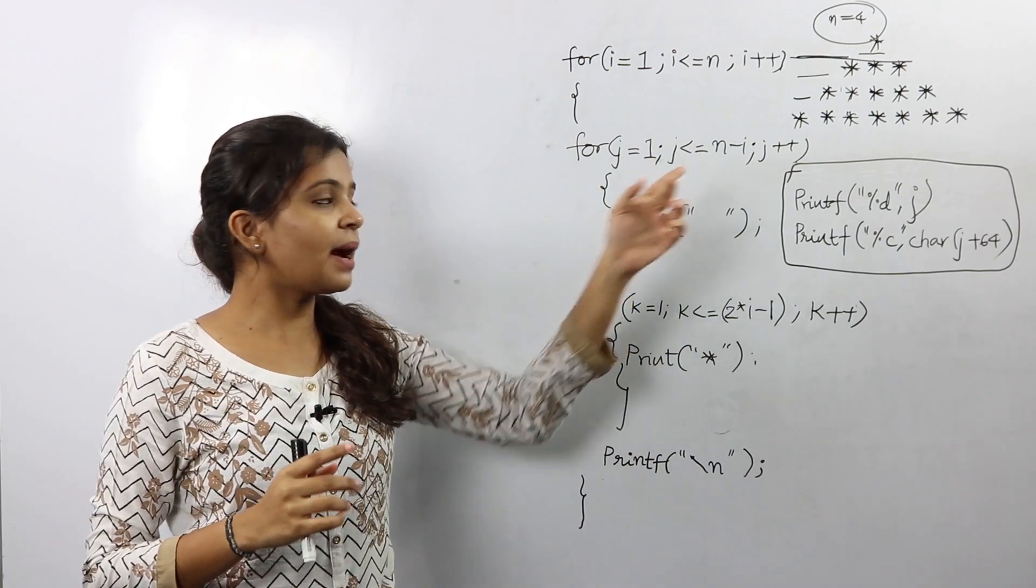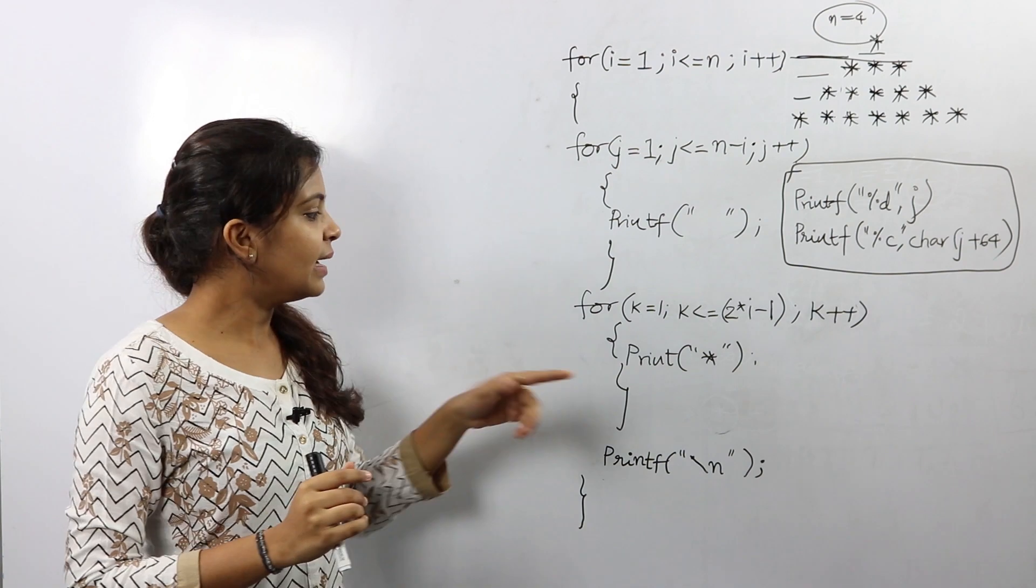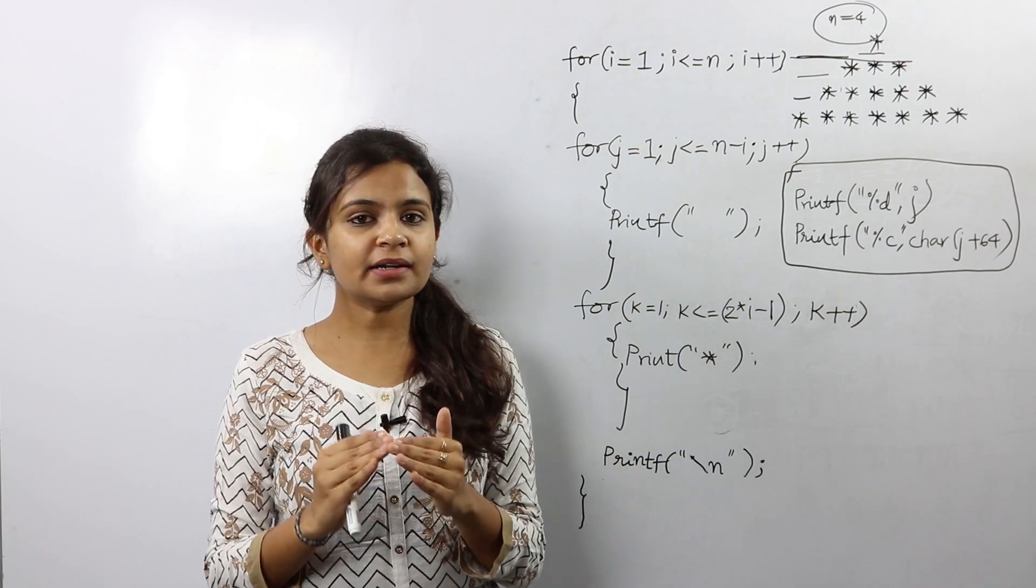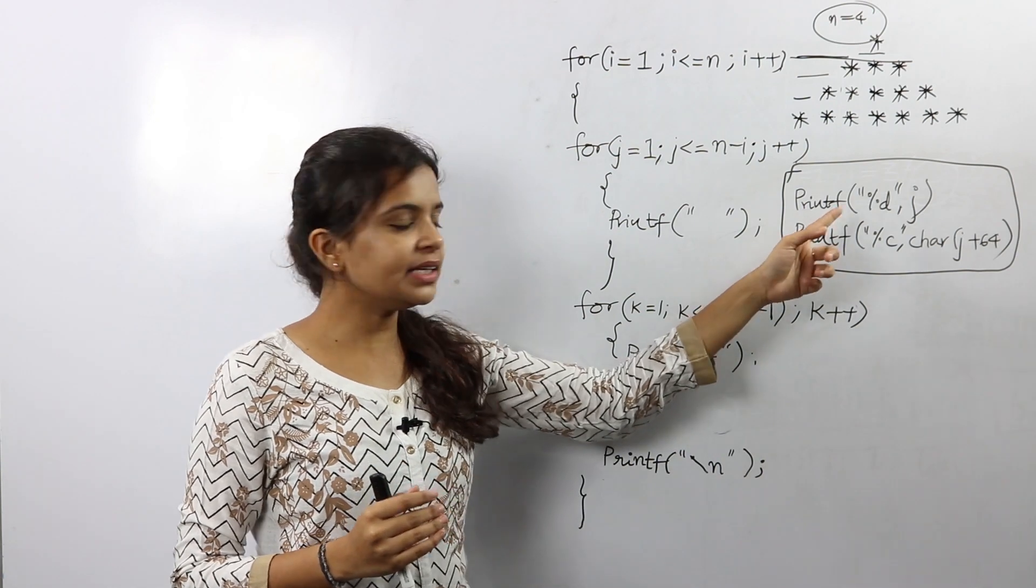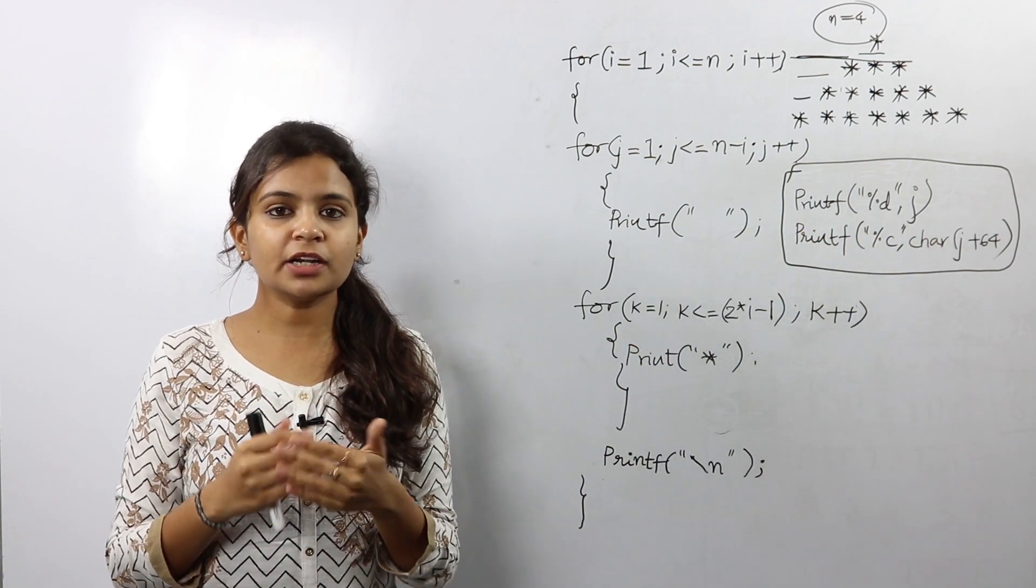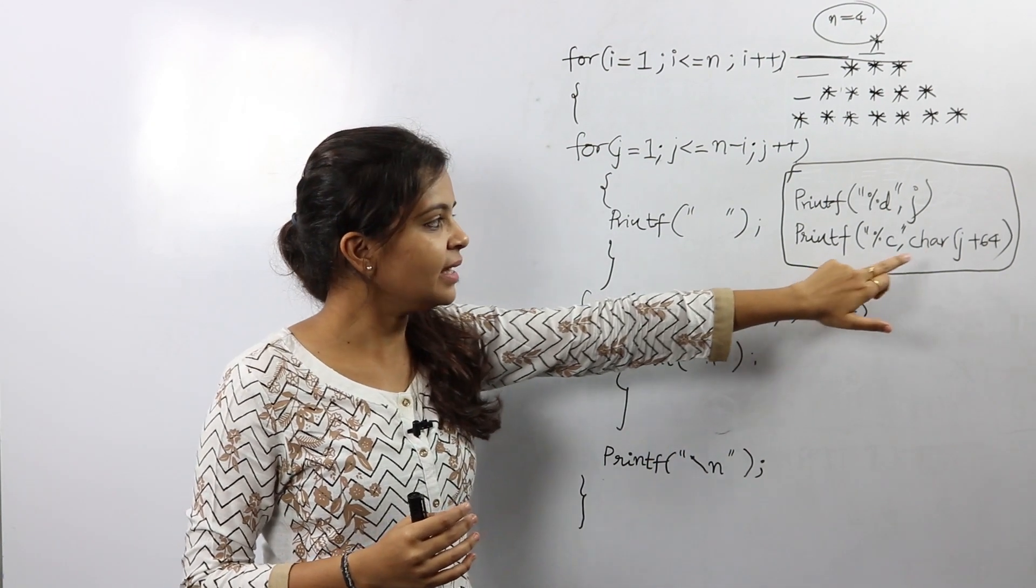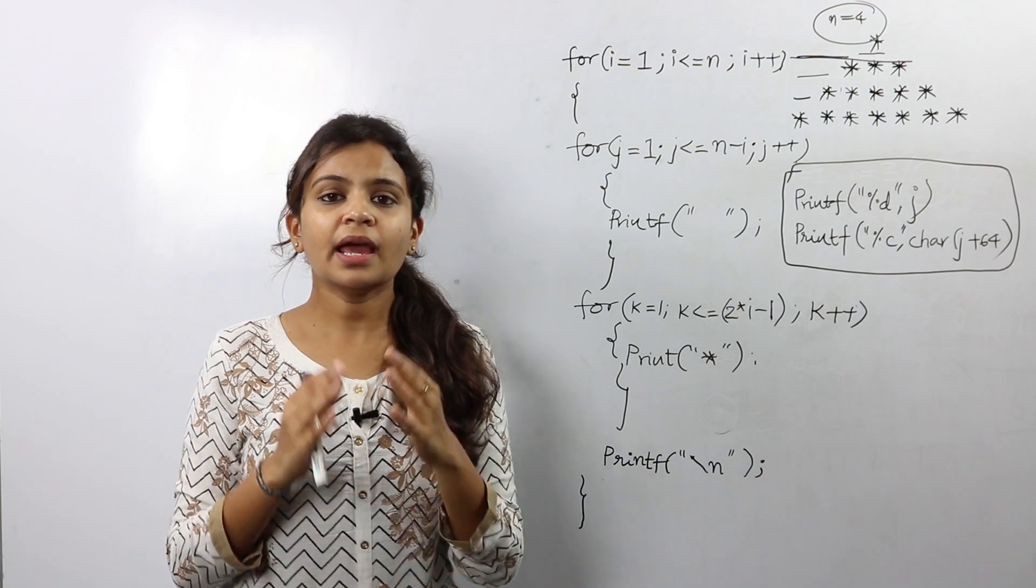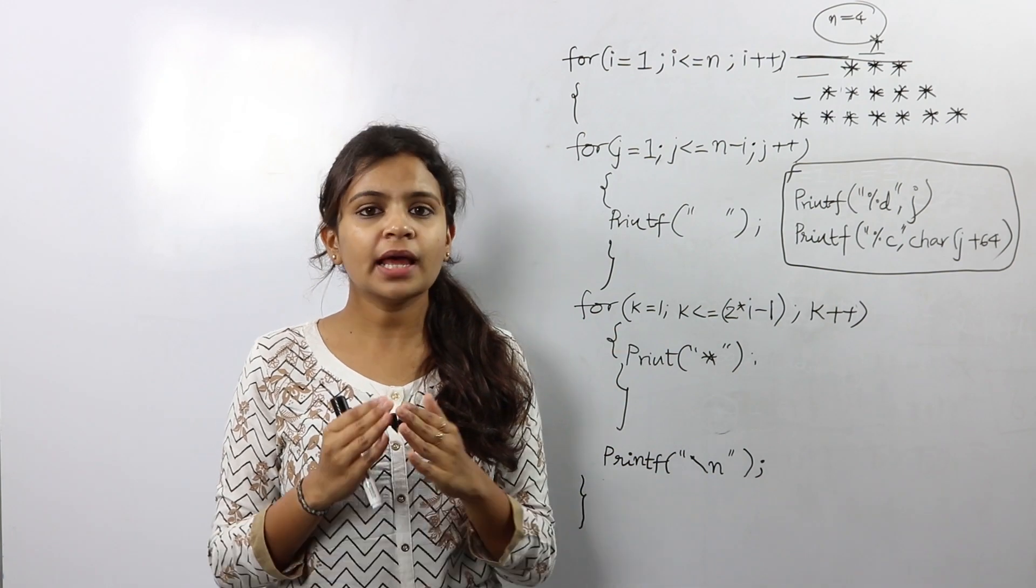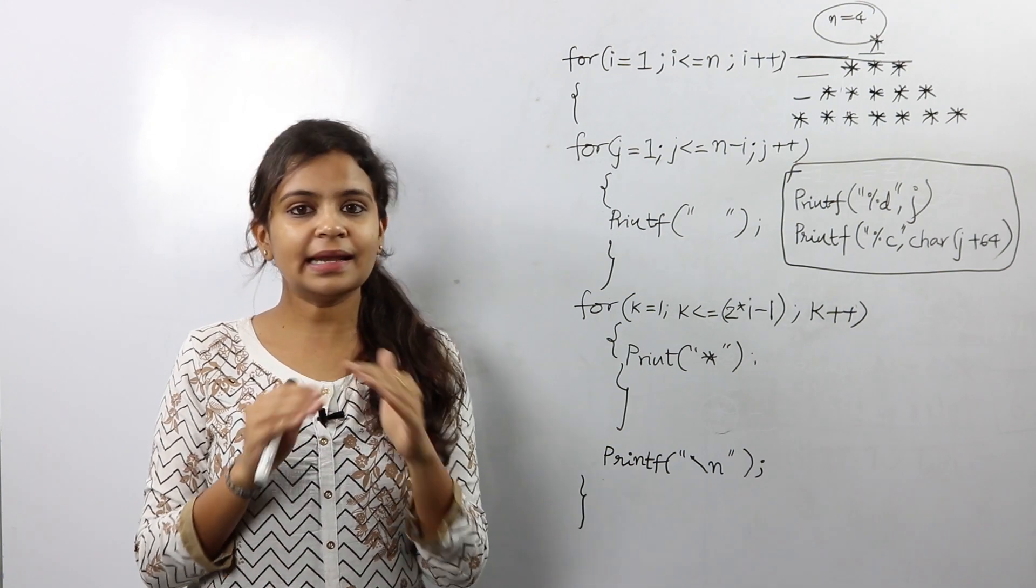So you can also print out this pattern using numbers and alphabets. All you have to do is replace this statement with this while you want to print it out with numbers. That is %d, j. And similarly when you want to print it using alphabets, replace it with this statement %c char of j plus 64. In case you have any doubts as to why it is char of j plus 64, then go check out the previous pattern printing video. We have discussed it in depth.